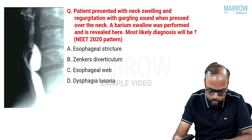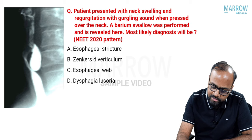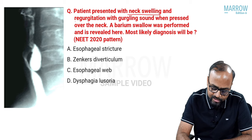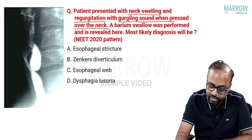Another topic which is the absolute favorite of examiners are conventional studies — barium studies when done for the bowel, and IVU/MCU studies when done for the urinary tract. Here is one such question: a patient presents with neck swelling and regurgitation with a gurgling sound when pressed over the neck.